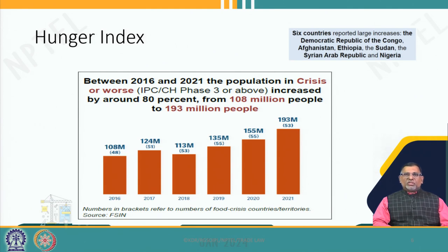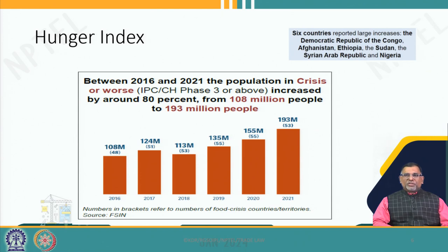We can say that 108 million to almost 200 million people are completely under crisis in terms of hunger. The hunger index all over the world is going up. This is not a good situation when compared to the Agreement on Agriculture and the situation in the member countries.